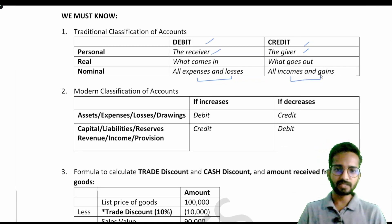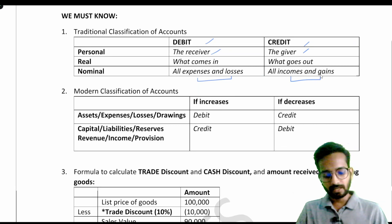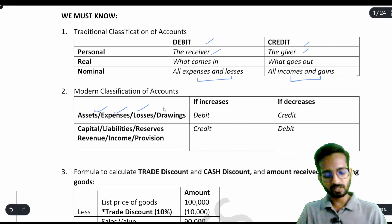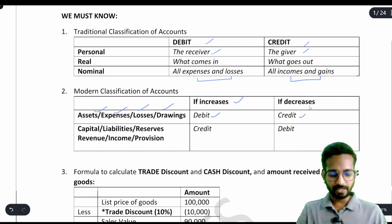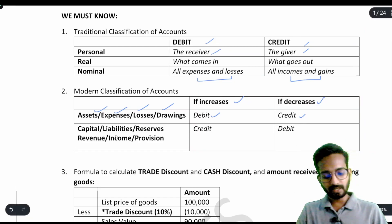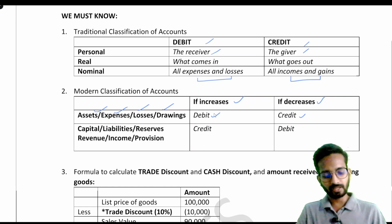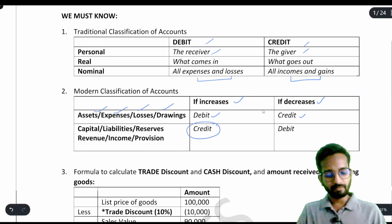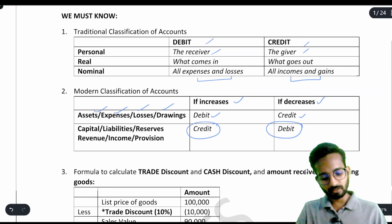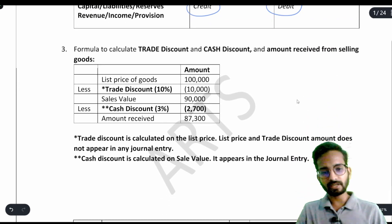These things we have already revised in the basics of accountancy. The next part is the modern classification of accounts, where assets, expenses, losses, and drawings will be debited if they are increased and credited if they are decreased. Capital, liability, reserves, revenue, income, and provisions are the opposite — when they are increased they will be credited, and when they are decreased they will be debited.